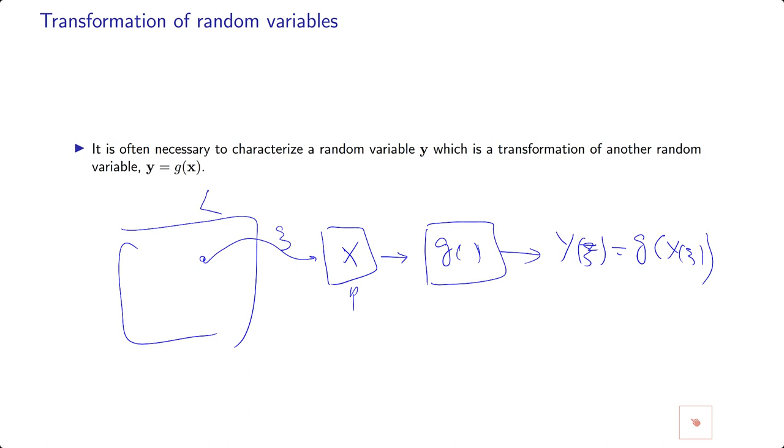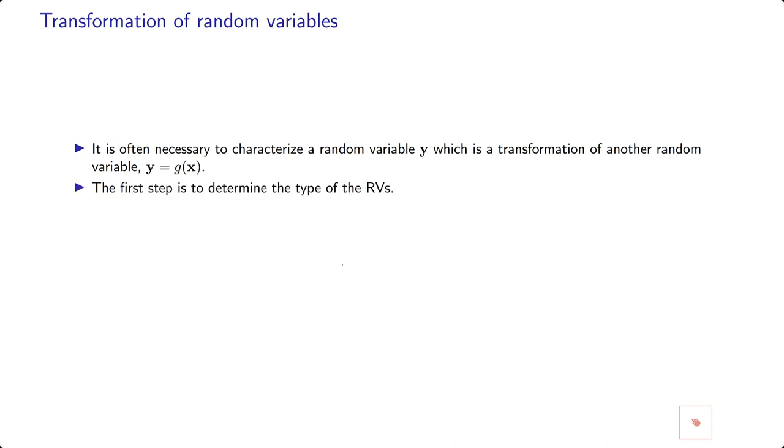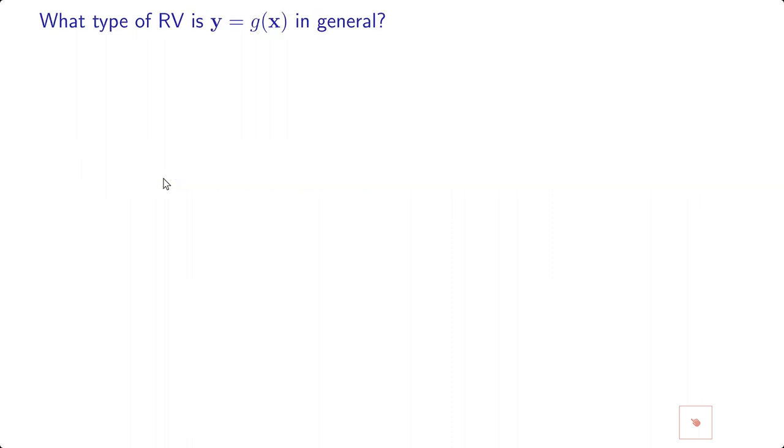This is the basic definition. The first step in determining the distribution of Y is always to determine what type of random variable Y is. If we make a mistake in that, it's likely we won't get a good solution. So what type of random variable is a function of a random variable in general?